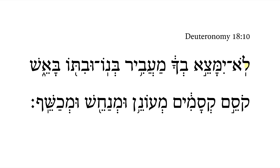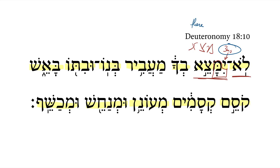Deuteronomy 18:10. We've got some interesting words here that come toward the end, but let's do the easy ones at the front first. We've got lo negation here, plus the nifal imperfect — third masculine singular with that yod performative. Notice the yi-ah vowel pattern here giving us that nifal. The verbal root is mem-tzade-aleph, to find. So the translation is: there shall not be found — that passive nifal — or it shall not be found among you.